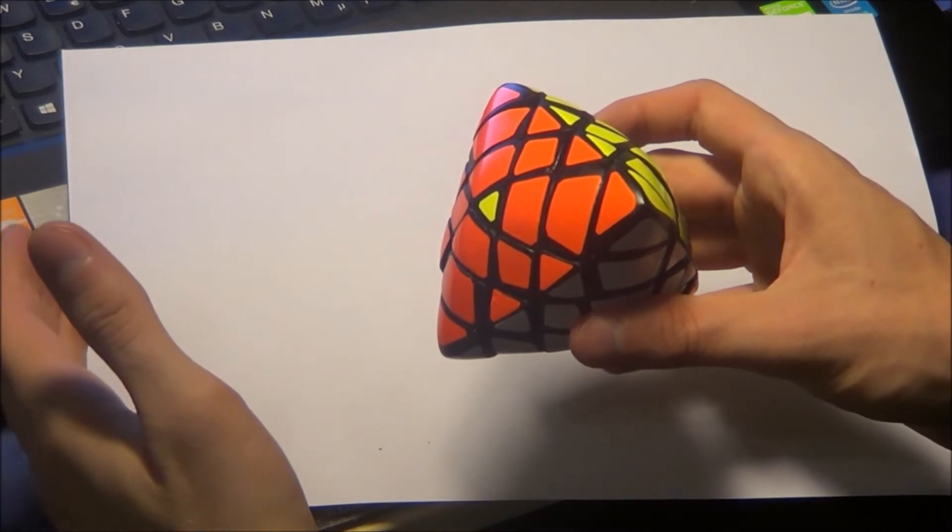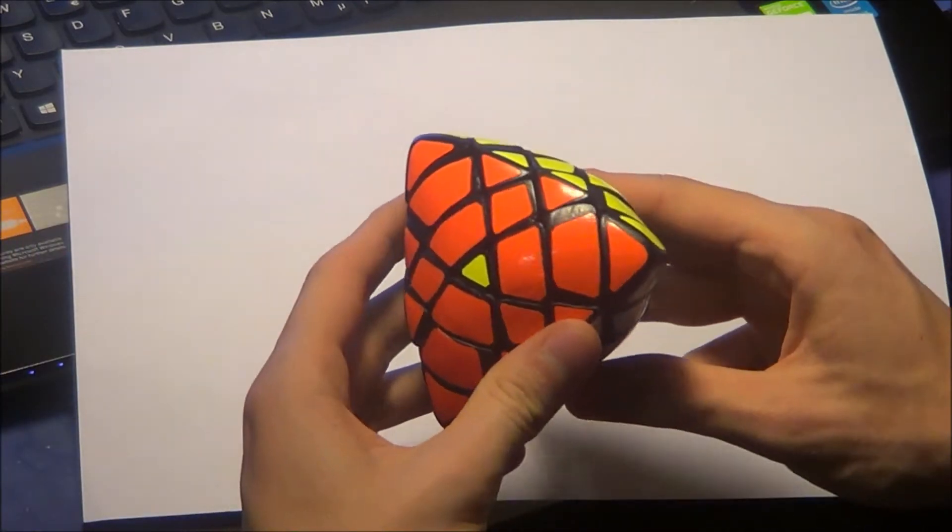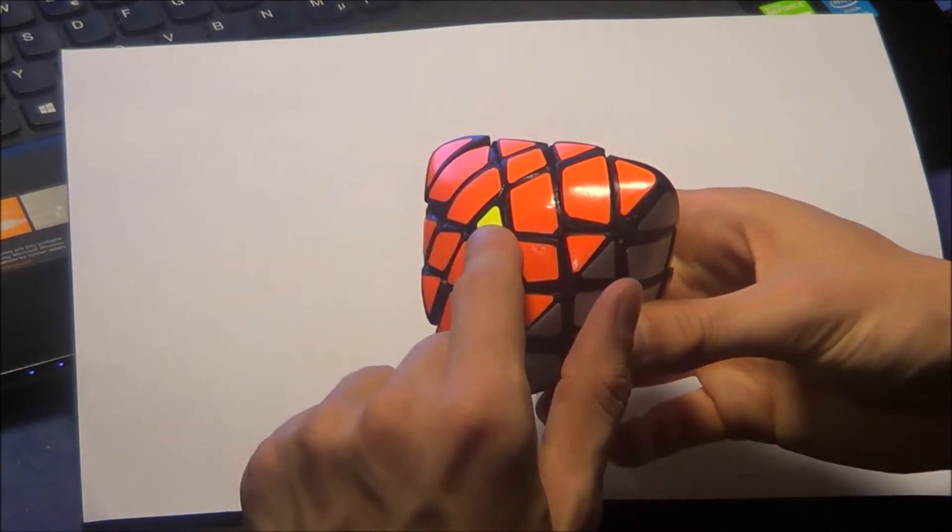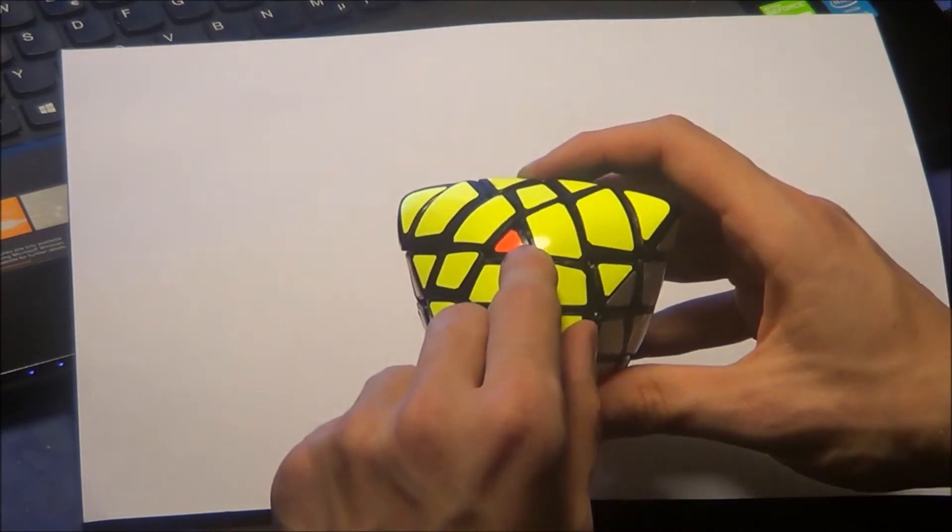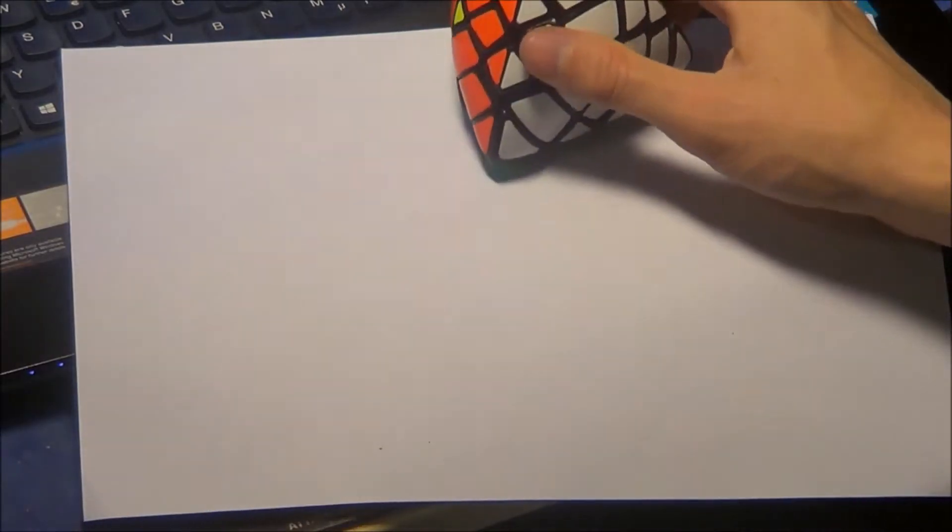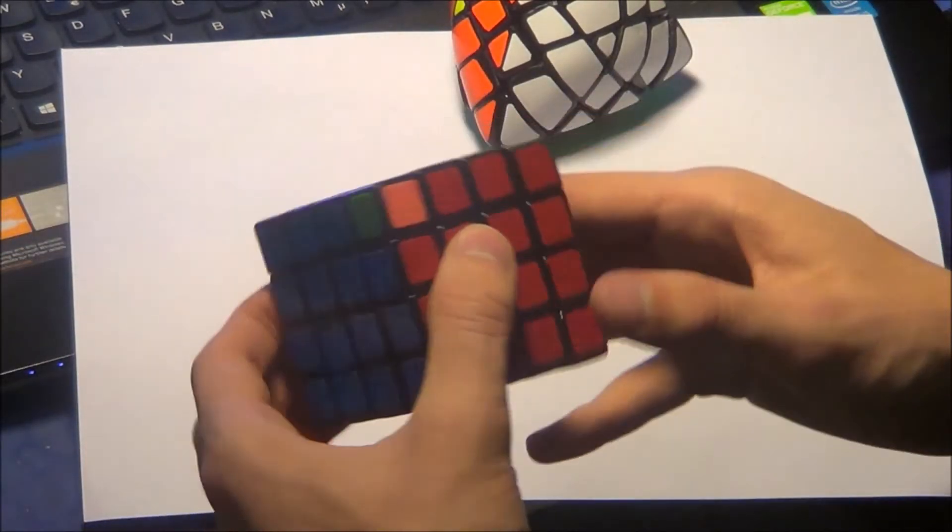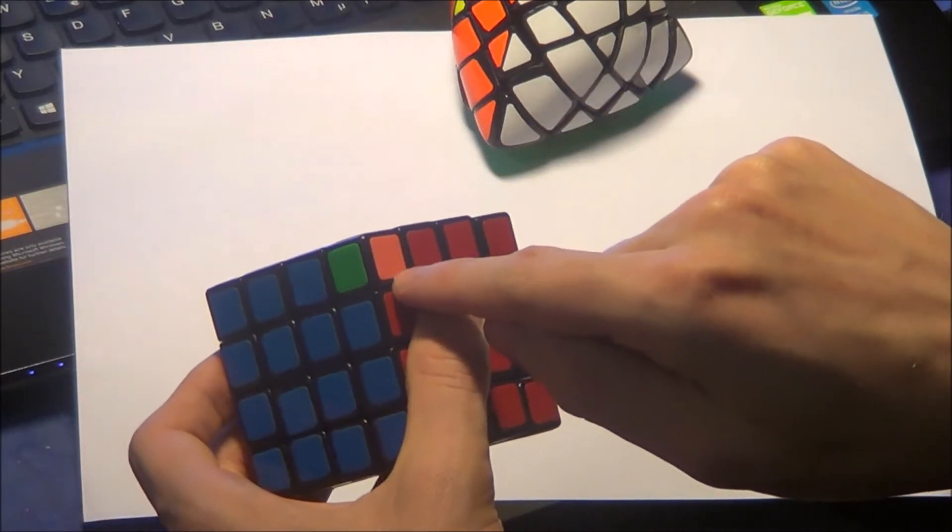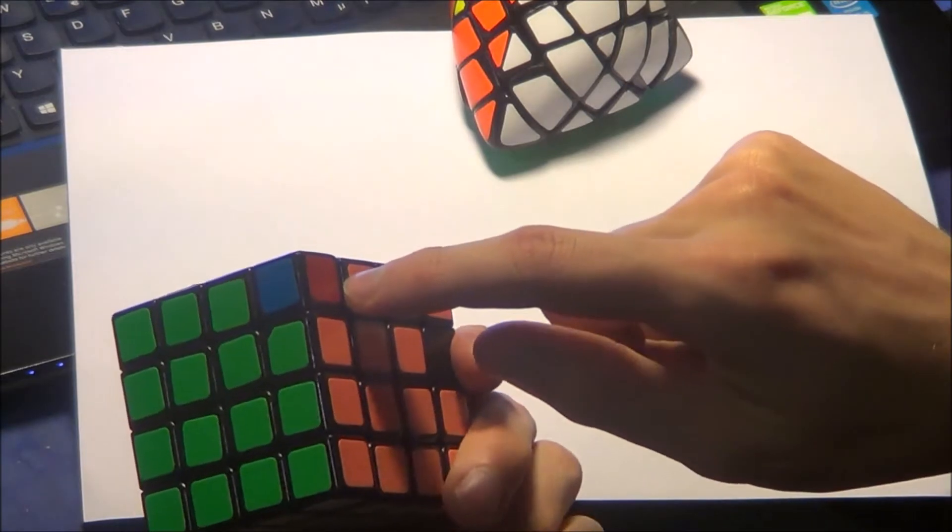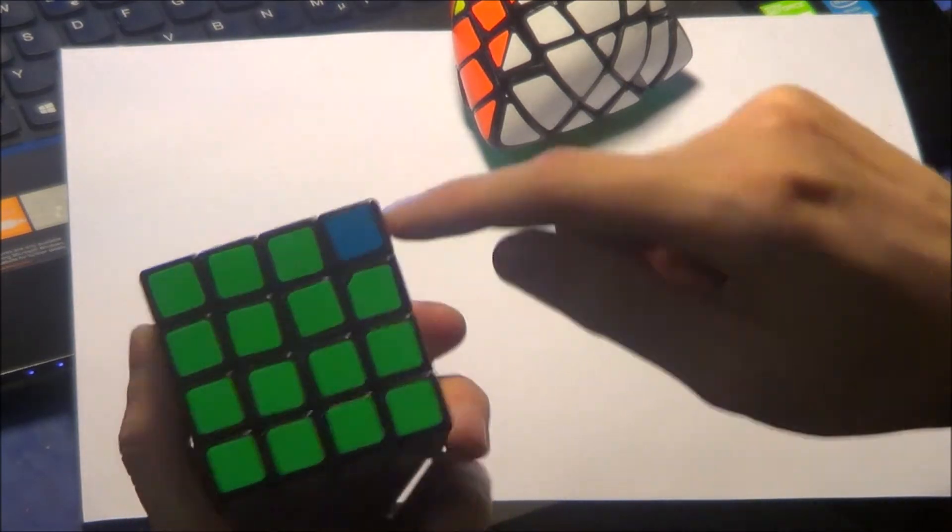Okay, now the second and last parity. In this parity, you have to switch two corners on the directly opposite side. In this case, it is the yellow one on this side here and the orange one on the opposite side. It's similar to the parity you can get on the normal 4x4 where you have this corner here on one side and on the directly opposite side this corner here.